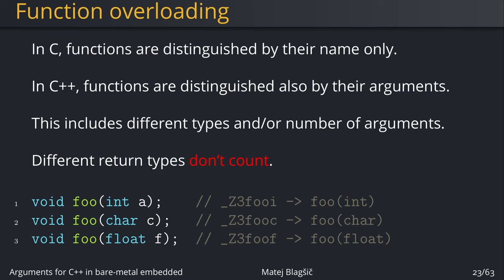But do know that this doesn't count for return types. In this example, we have three different declarations of the function foo and each of them has the same return type, but the input arguments are different. One accepts one int, one char, and one float, and the compiler can tell the difference between these functions.